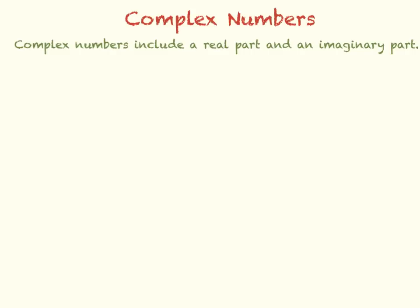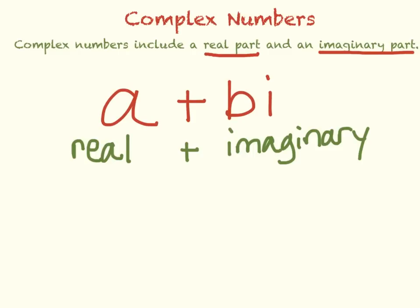Now we're going to talk about complex numbers. Complex numbers are numbers that include a real part and an imaginary part, and they are written in the form A plus Bi, where A is the real part and Bi is the imaginary part. Also, please keep in mind that the real part always comes first. That's important.